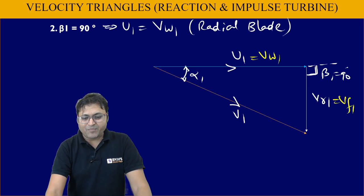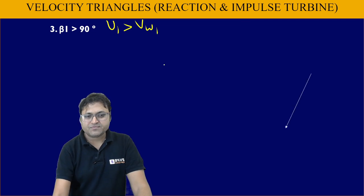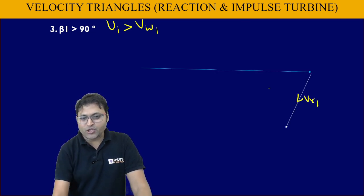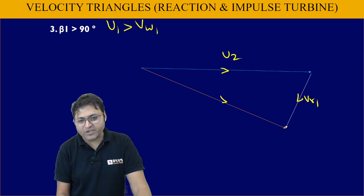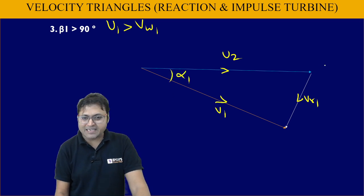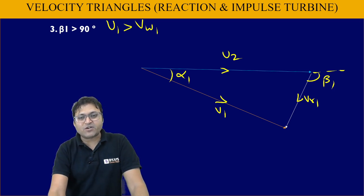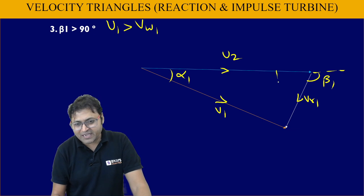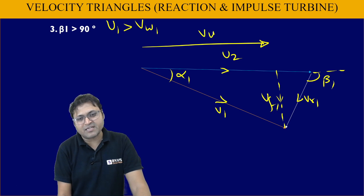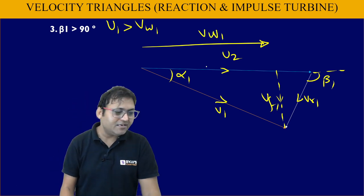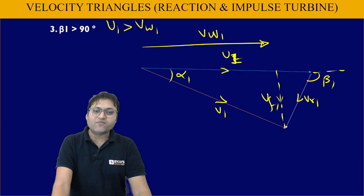When β1 is greater than 90 degrees, then U1 is greater than Vw1. Vr1 will come at an obtuse angle, U1 will be horizontal towards the right, and the resultant is V1. Angle α1 is inside the triangle and β1 is outside. Resolving V1: the vertical component is Vf1 and the horizontal component Vw1 is less than U1. These are the three inlet velocity triangles for the turbine.